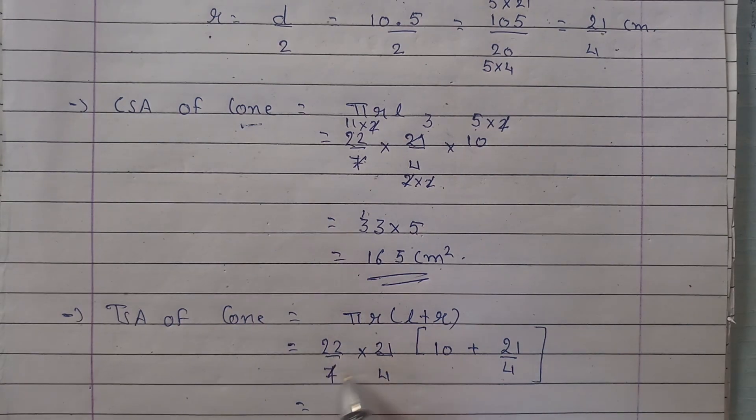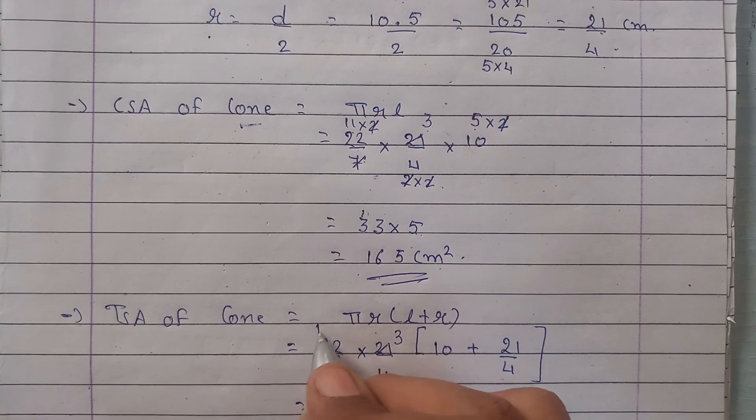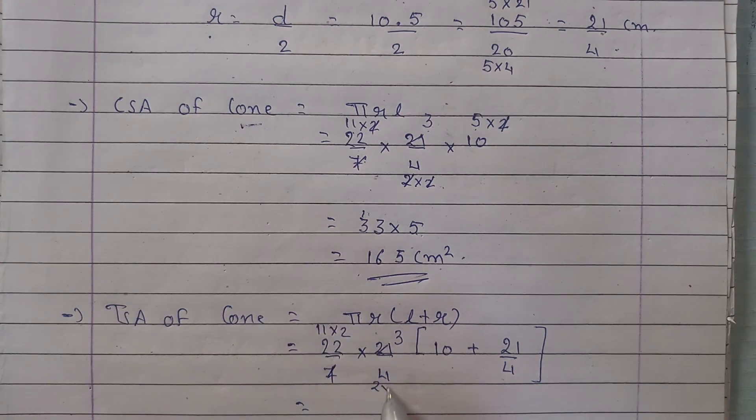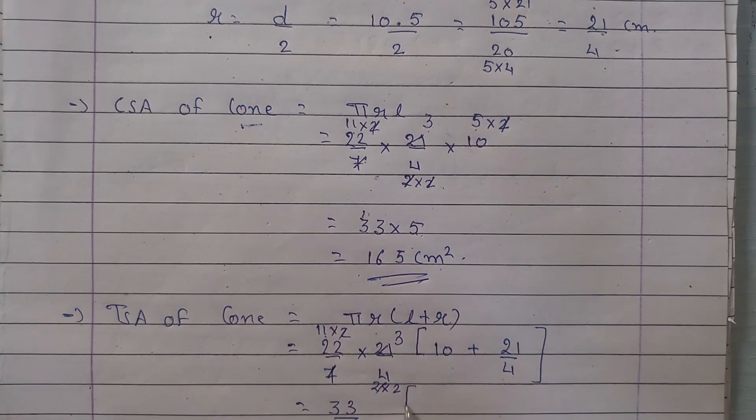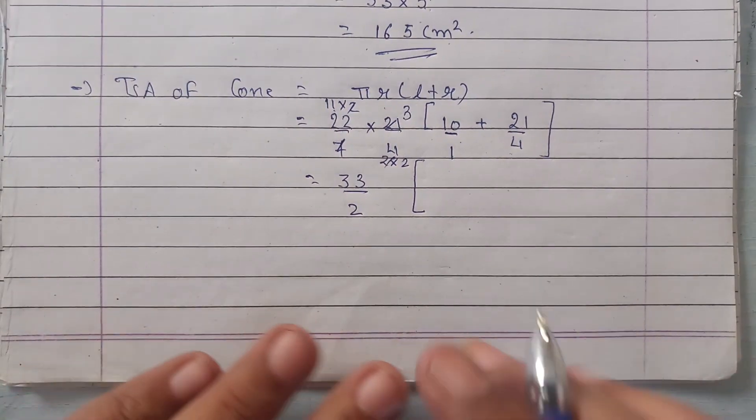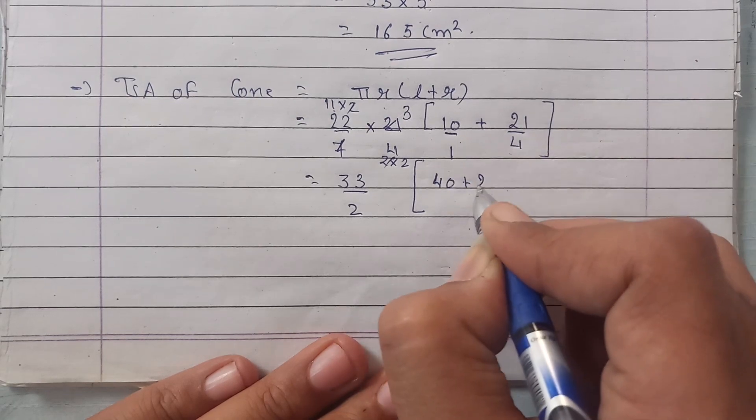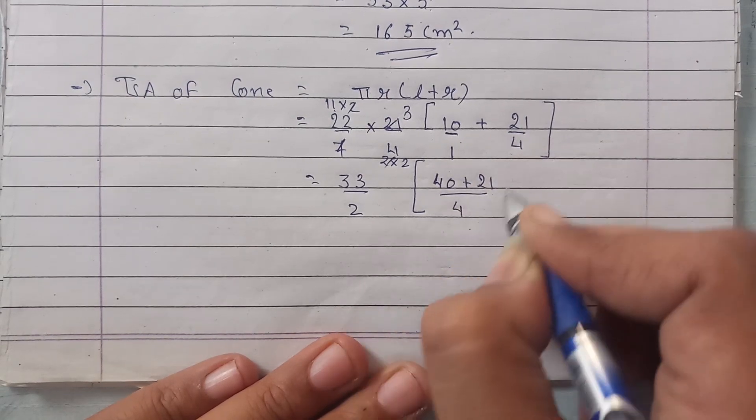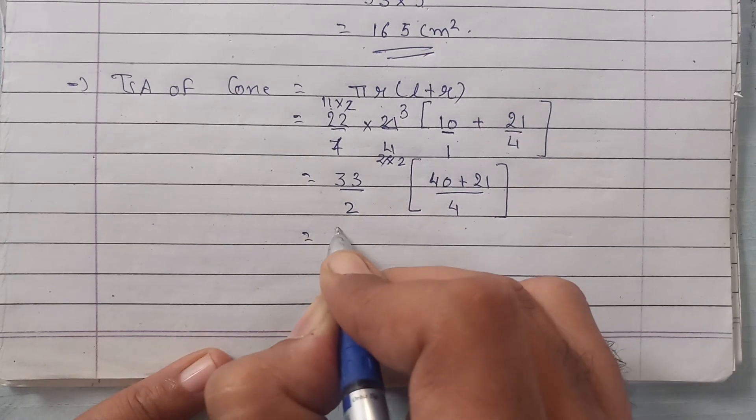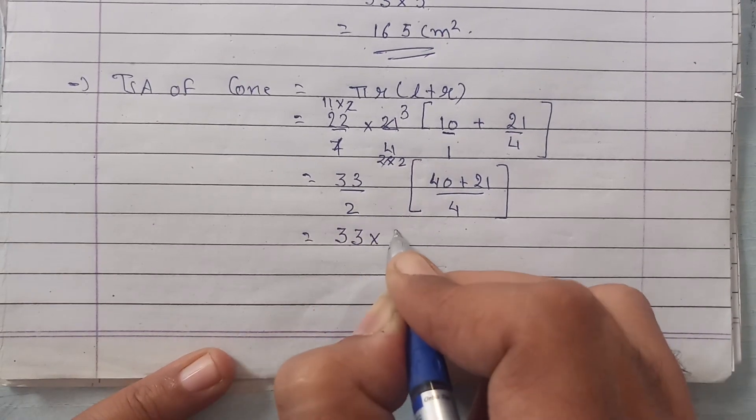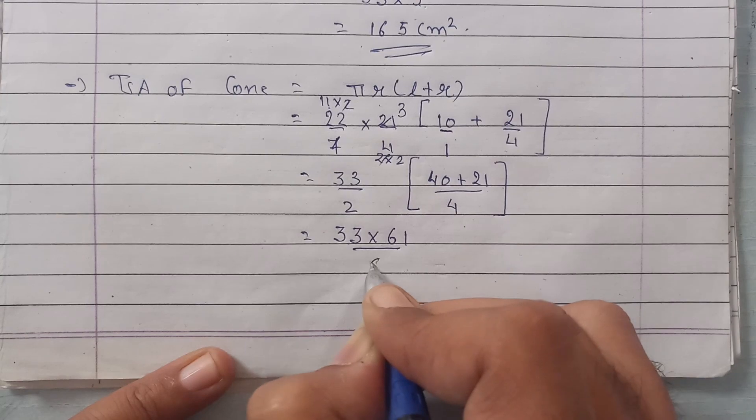Now on solving it further, this is 7 into 3 is 21, 11 into 2, and here it will be 2 into 2. So ye 2 and 2 cut ho jayenge. What we have is 11 into 3 is 33 upon 2, aur bracket mein, yaha pe hum log cross multiplication karenge. So that will be like 10 into 4 that is 40 plus 21 upon 4. Now this is 33 into 61 divided by 4 into 2 that is 8.